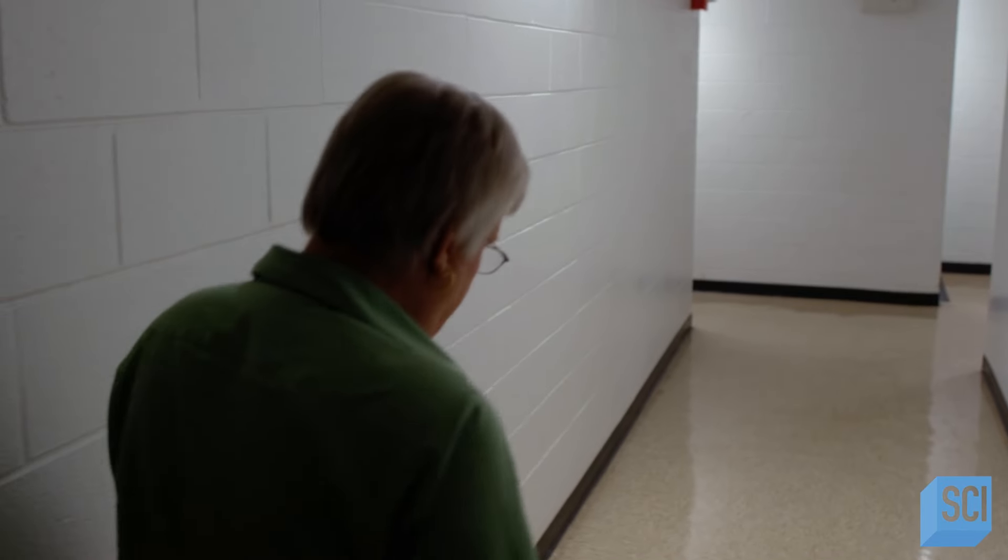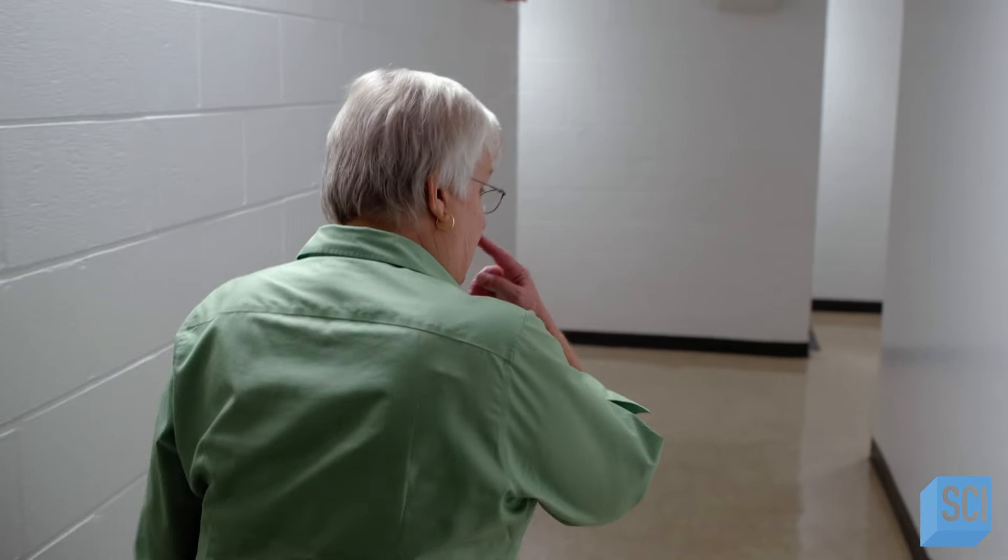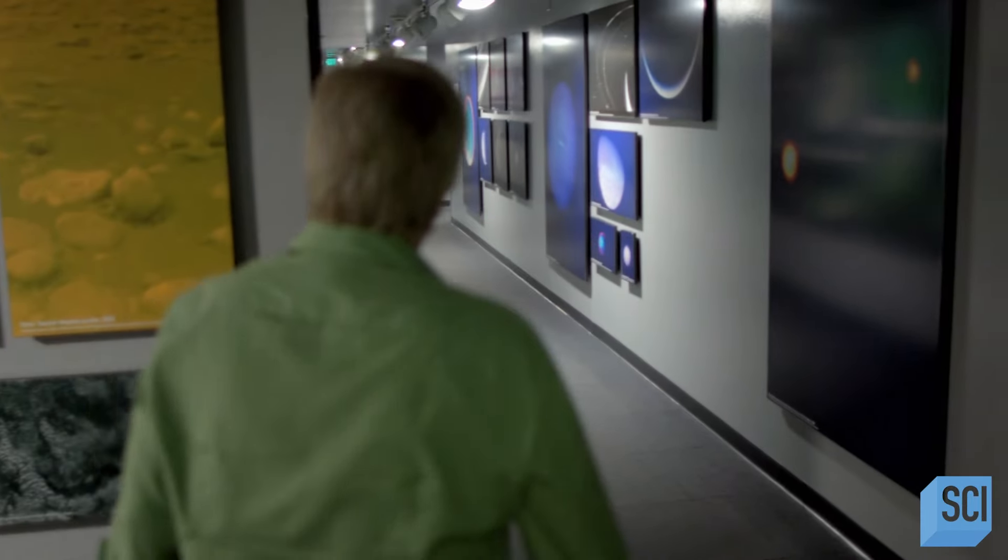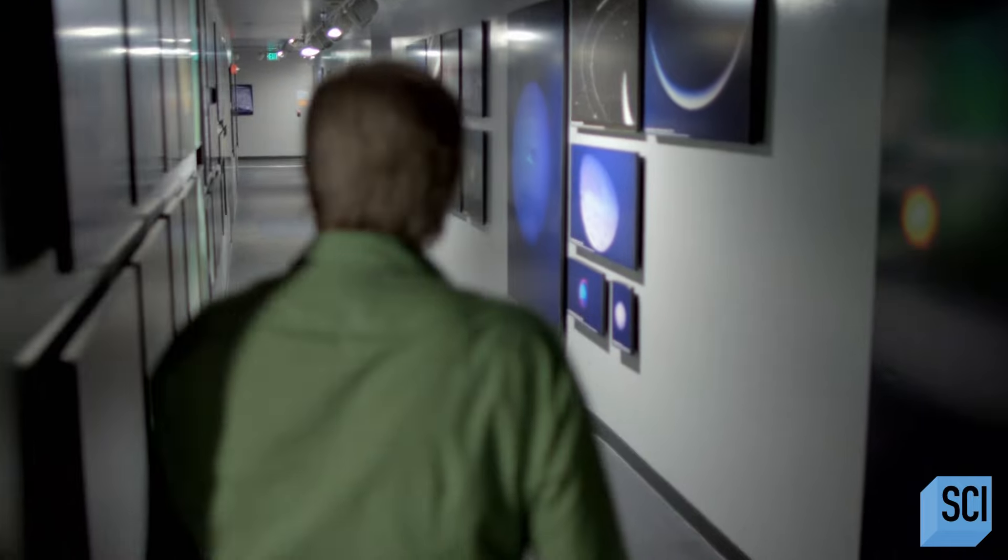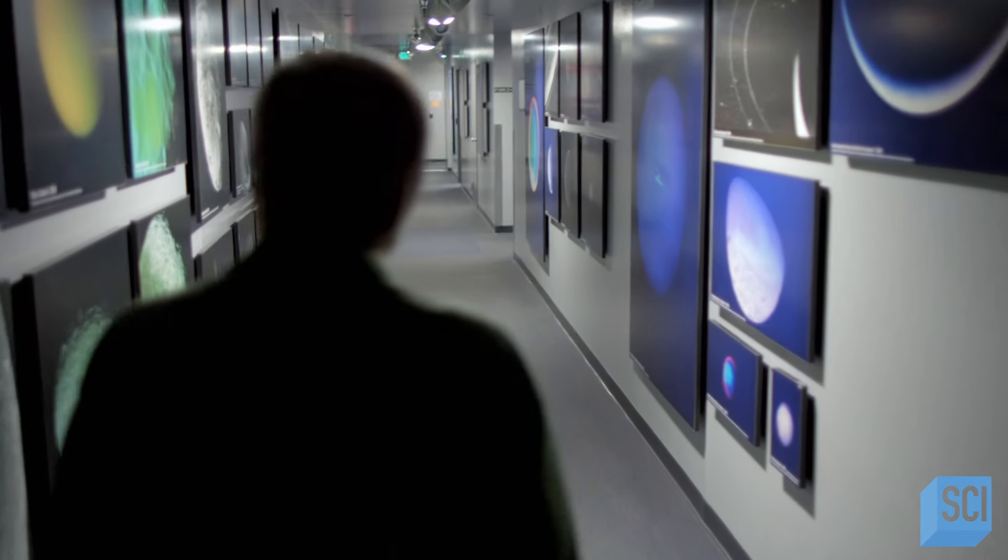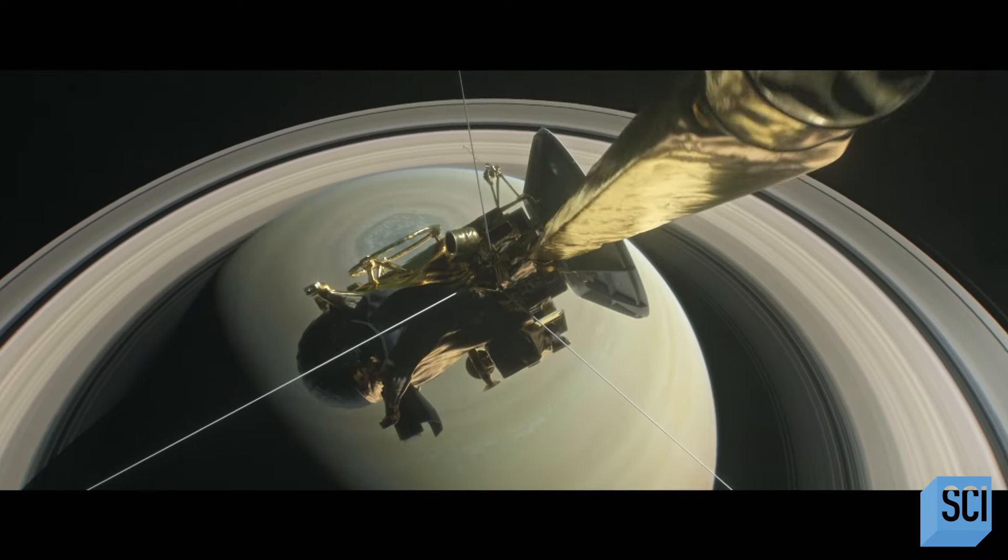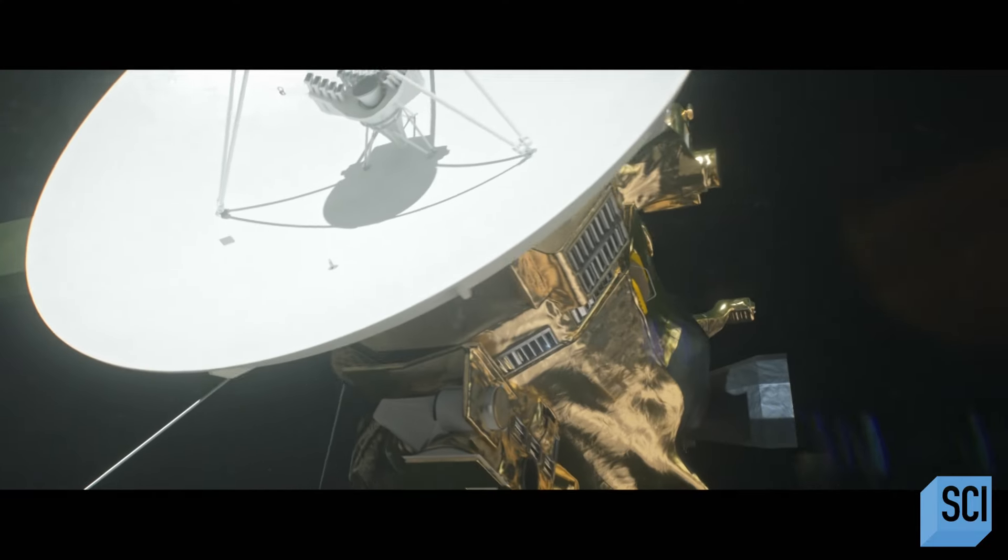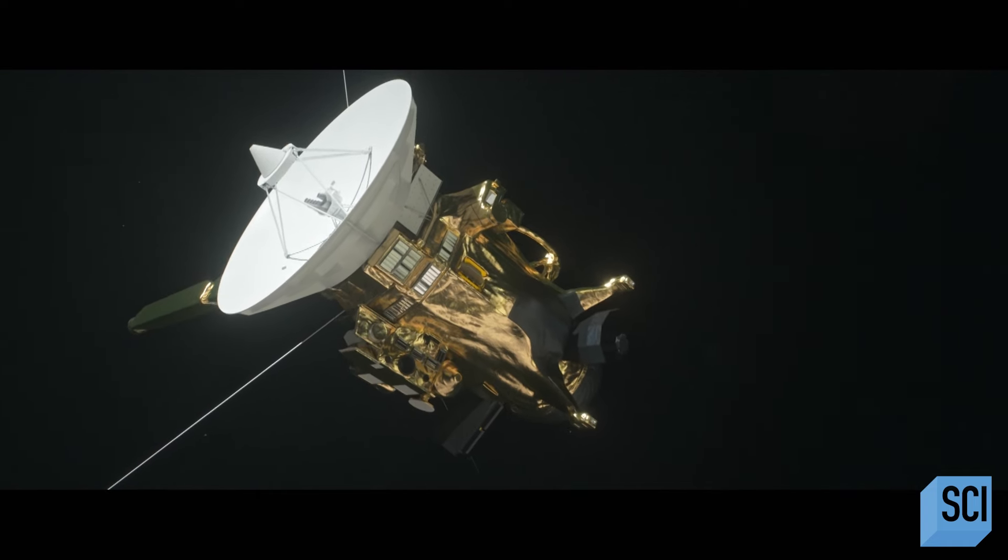Cassini divides its time between gathering data, which it stores on its internal memory, and then sending it back home. A typical day, we're out taking pictures, collecting data, storing it on the solid-state recorder, and then we'll turn it back to Earth, and we'll play it back for nine hours. We only have four gigabits of data that we can load up, and it takes nine-plus hours to play that data back.